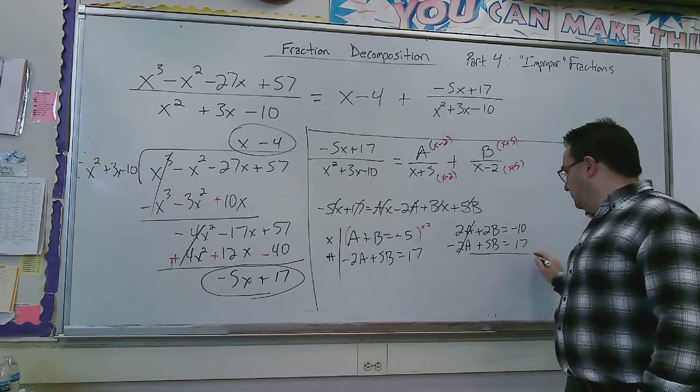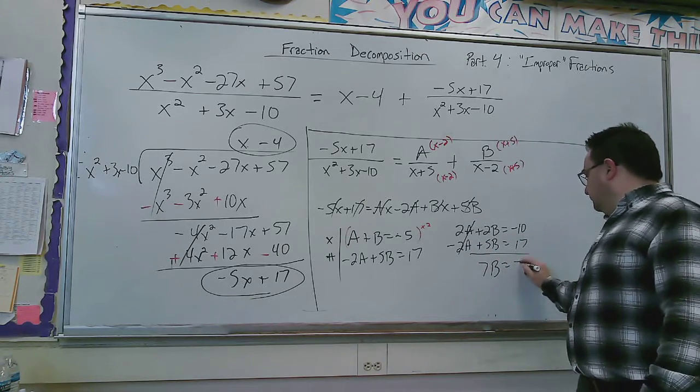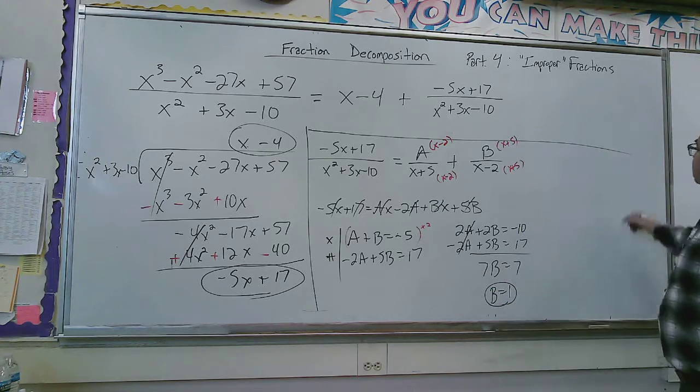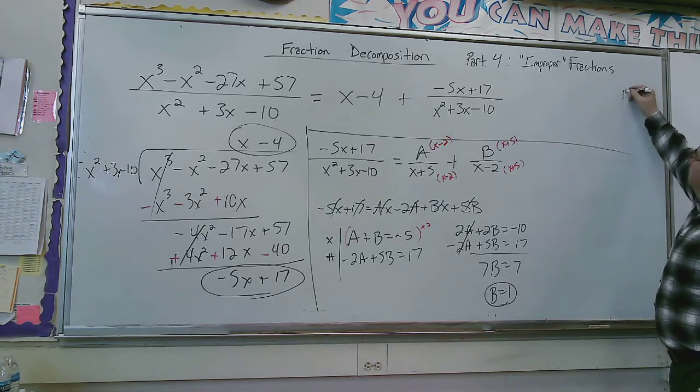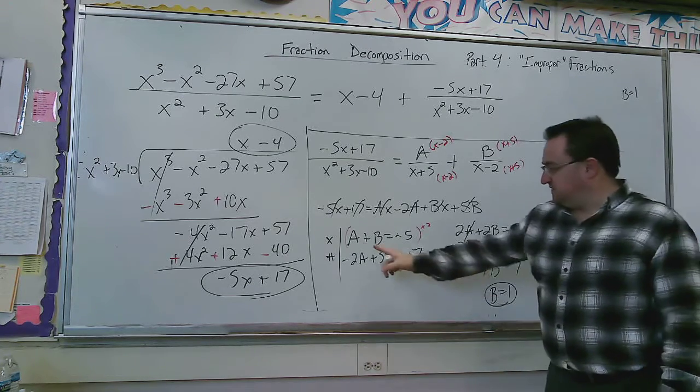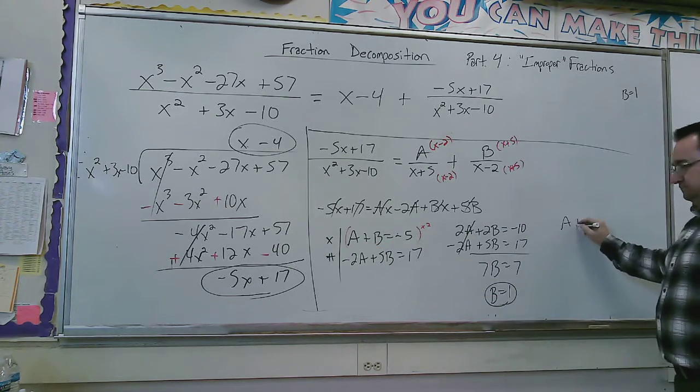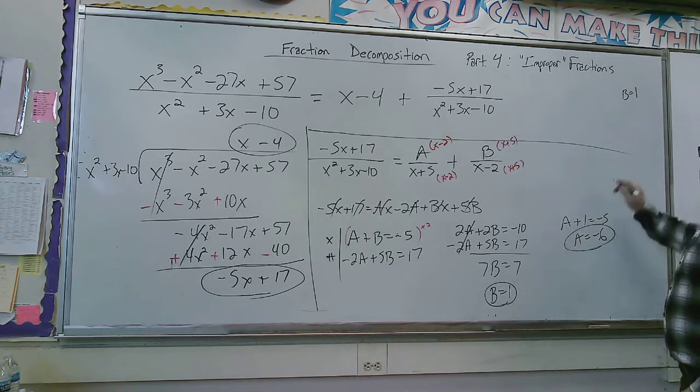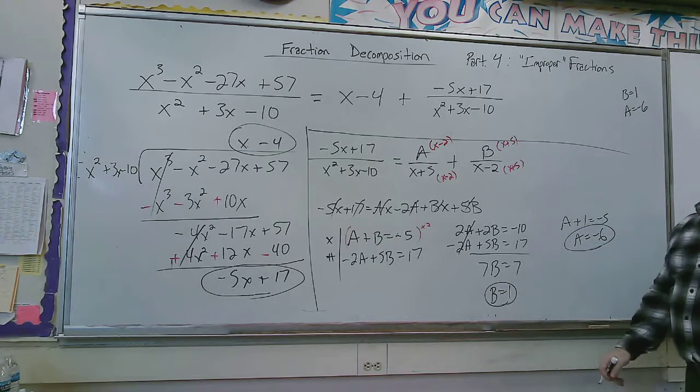Yeah, this is looking good. So 7b is equal to 7, so b's got to be 1. That's pretty nice. I'll write that over here. Now I have to figure out a. Let's see. If b is 1, then a's got to be minus 6. Almost done.